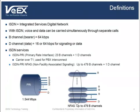ISDN stands for Integrated Services Digital Network. With ISDN, voice and data are carried by bearer channels, also known as B-channels, which occupy a bandwidth of 64 kilobits per second. A data channel, also known as a D-channel, handles signaling at 64 kilobits per second, but can also handle signaling at 16 kilobits per second.